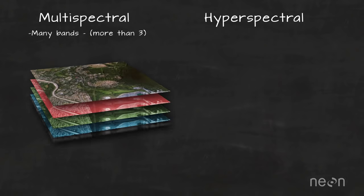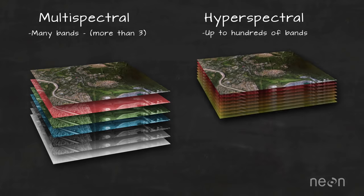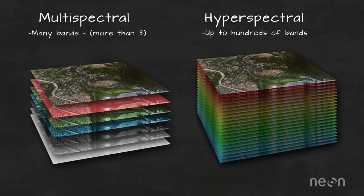Imaging spectrometers produce what are called multi- and hyperspectral remote sensing data. Multi, meaning many bands, more than three, and hyper, meaning up to hundreds of bands, collected at very high spectral resolution.